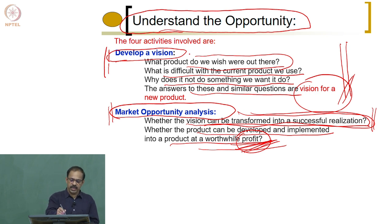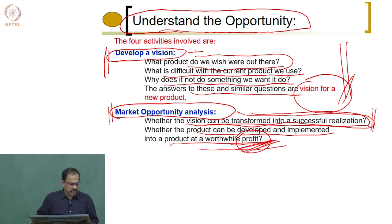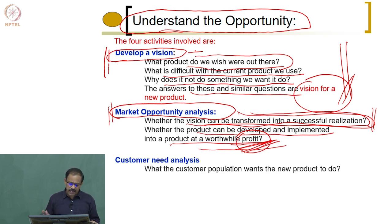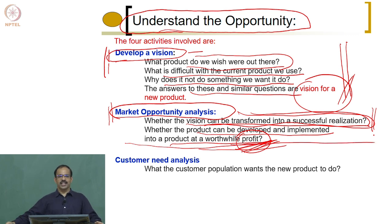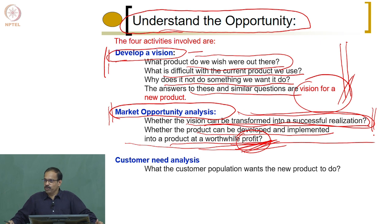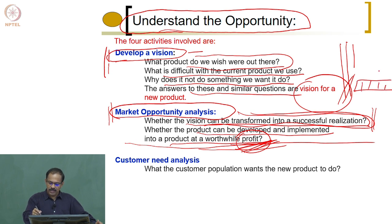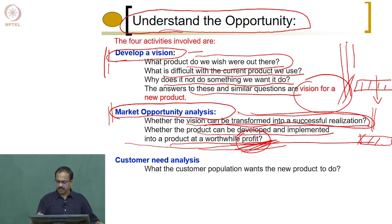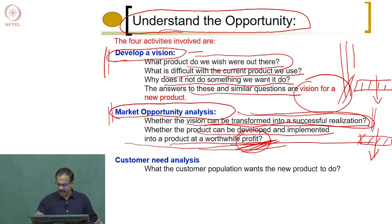That is the second activity in understanding the opportunity: first you need to have a vision, second you need to look at the market and see whether it can be sold with a reasonable profit. Once you complete this analysis and find your vision is great and market opportunity confirms good profit potential, you move through a gate to the next stage — customer need analysis.